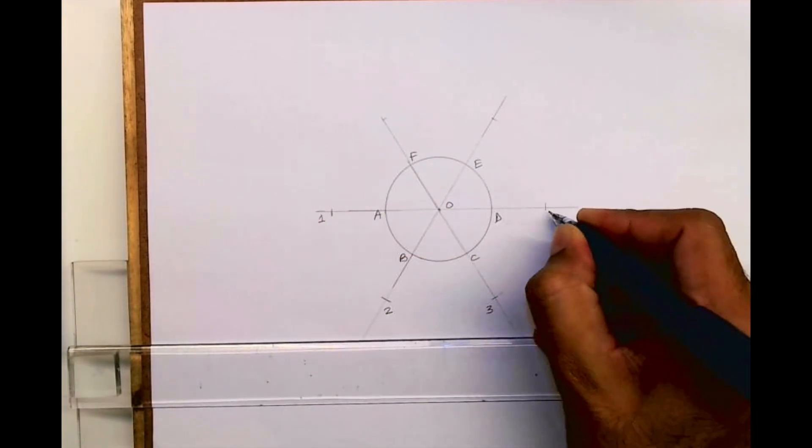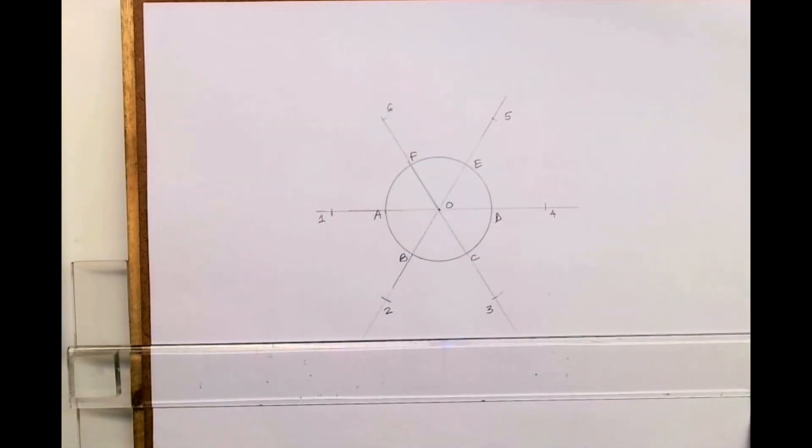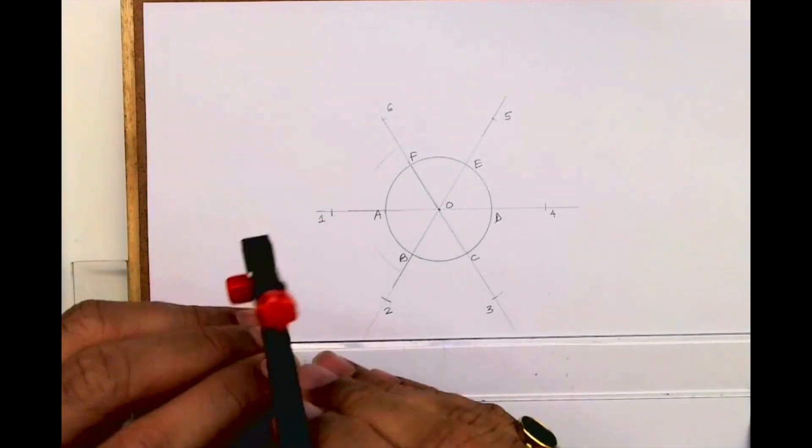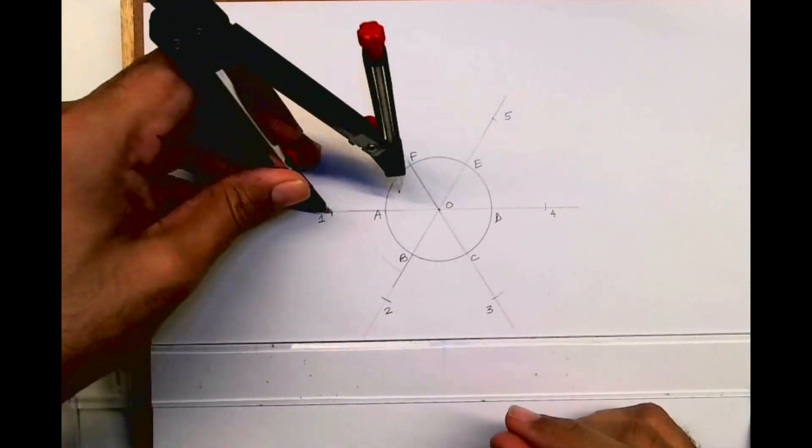And I will name them as 1, 2, 3, 4, 5, 6. Now what I need to do is bisect O-1, so I will get a tangent at point A.